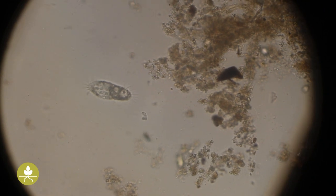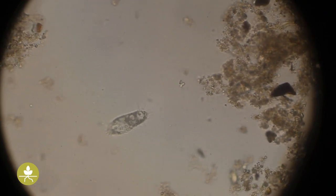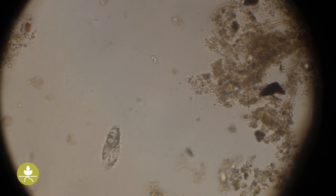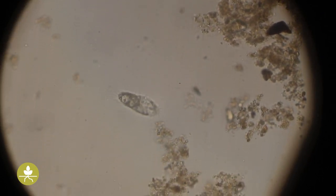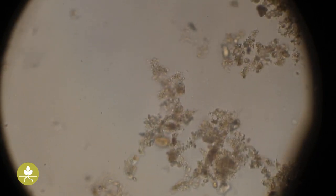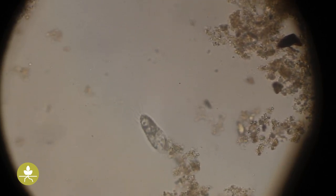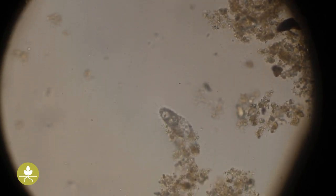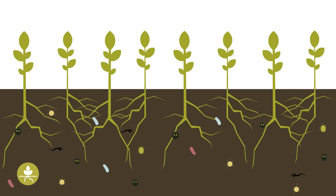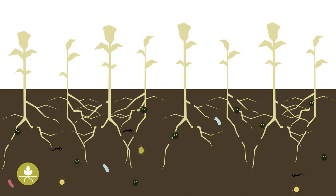The soil is inhabited by a diversity of very small living organisms. The majority of them are involved in the degradation of organic matter, contributing to the transformation of organic debris into mineral nutrients and organic matter, essential to feed the plants and maintain soil health. Although practically all these organisms are beneficial to plants, a small number of them can disturb the normal functions of the plant, thereby causing plant diseases.